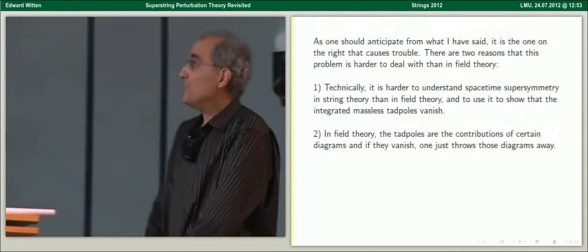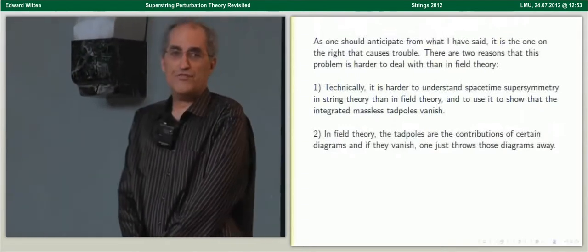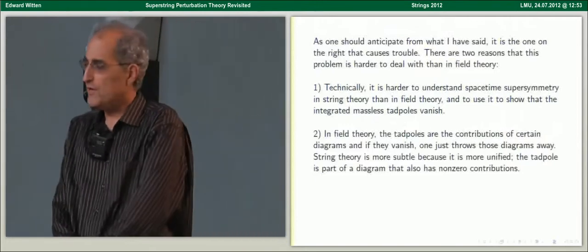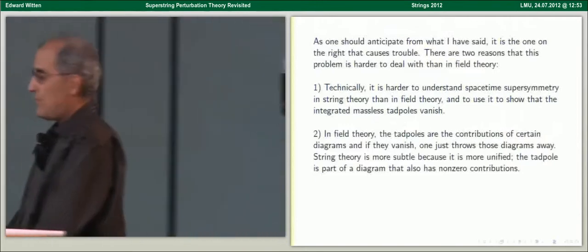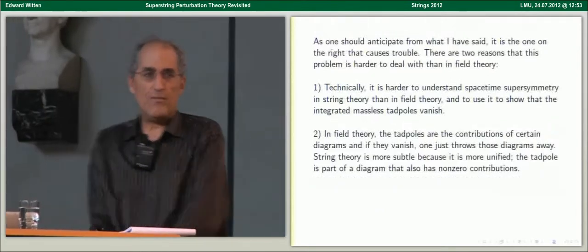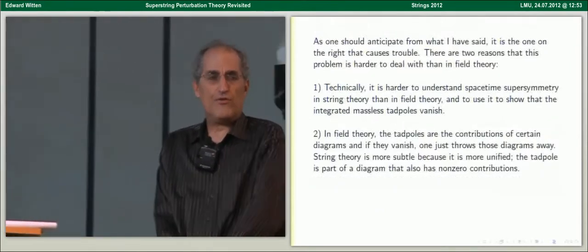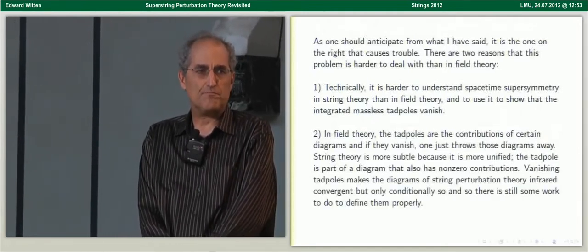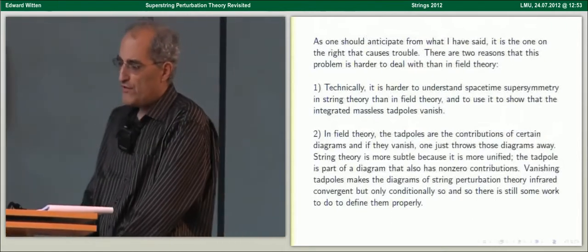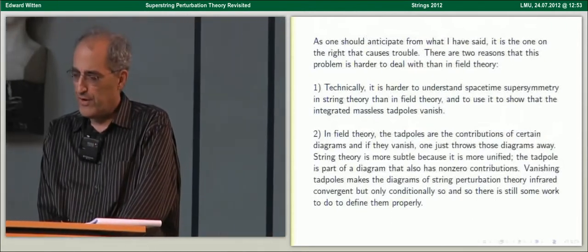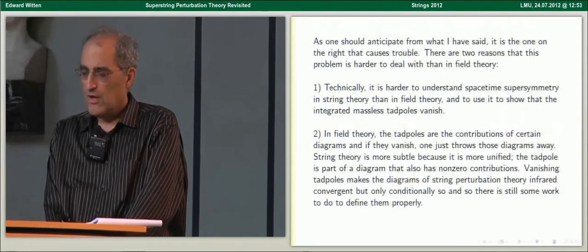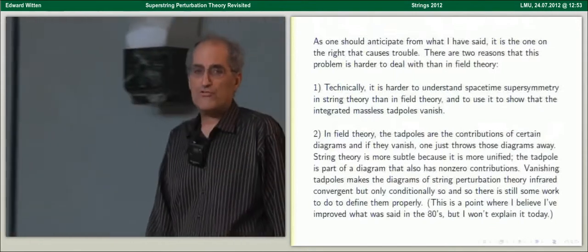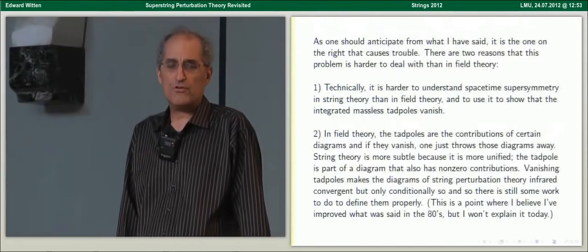Also, in field theory the tadpoles are contributions of certain diagrams, and if they don't vanish, we just throw them away. But string theory is more subtle because it's more unified — the tadpole is part of a diagram that also has non-zero contributions. For example, in oriented closed string theory, there's only one diagram at G loops, so if we were to throw it away, we'd be throwing away everything. When the tadpole vanishes, the diagrams of string perturbation theory only become conditionally convergent, and there's still a little bit of work to do. That's one point where what was done in the 80s can be clarified, but we won't go in that direction today.